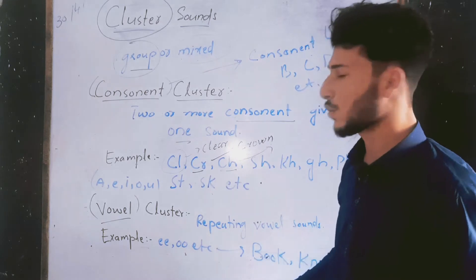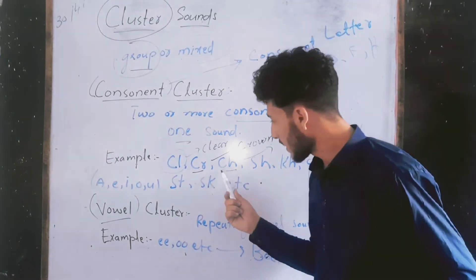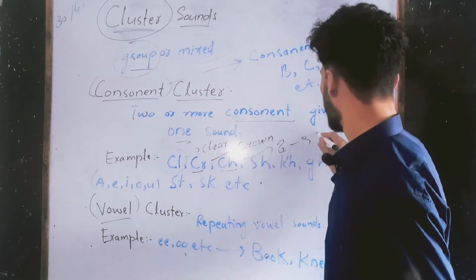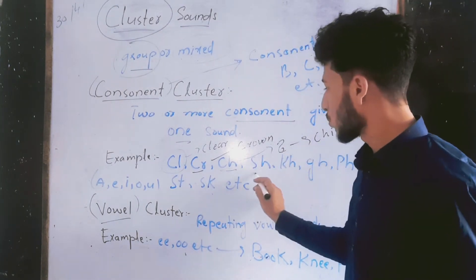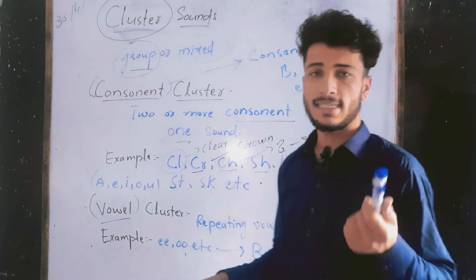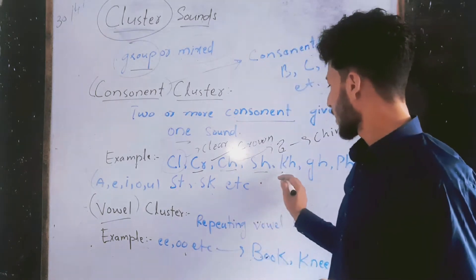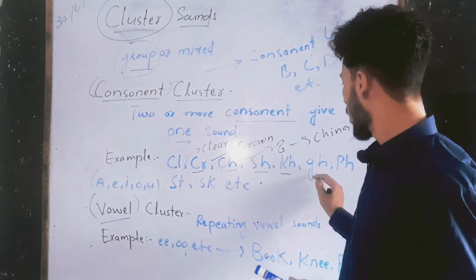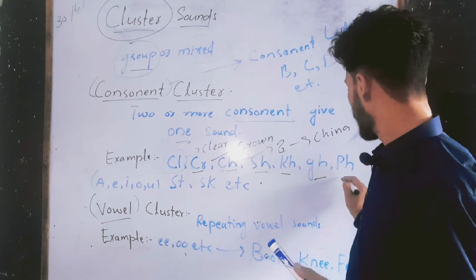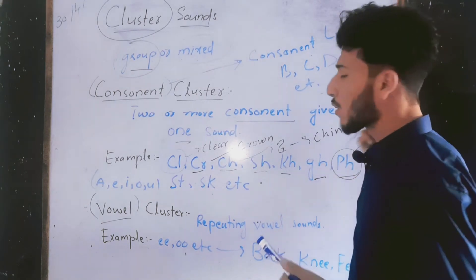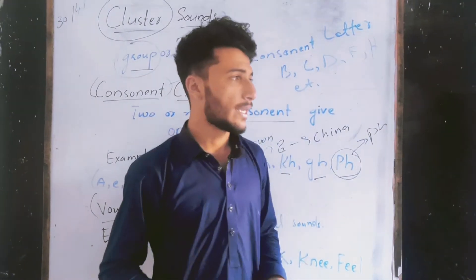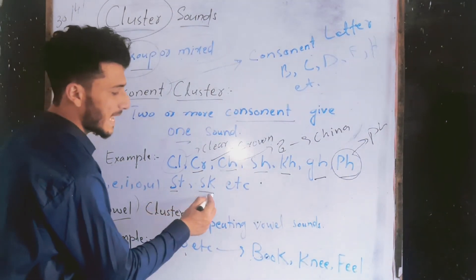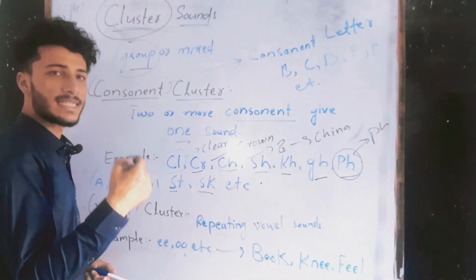Look here: 'c' and 'h' are both consonants, so 'ch' giving the sound 'cha' is a consonant cluster. Also 'sh' gives the 'sh' sound, 'kh' gives a 'ka' sound, and 'ph' gives us the sound of 'f' — like in 'pharmacology' or 'phonetics.' Other examples: 'st' in 'stop,' 'sk' in 'scam' or 'scheme,' and 'st' in 'student.'